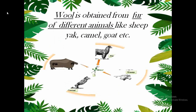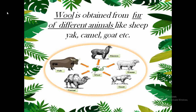Wool is obtained from the fur of different animals. As you can see in the picture, fur of sheep, goat, camel, yak, etc. are used to make wool, and this wool fiber is then used to make woolen clothes — the woolen wears we use in winter season to protect ourselves from cold. Wool is a natural animal fiber; these animals have an outer covering of hair which is shaved off to obtain wool fiber.